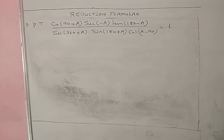tan(180 - A) = minus tan A. Since 360 = 0, sec(360 + A) = sec A. sin(180 + A) is a standard result = minus sin A. Then cot(A - 90).